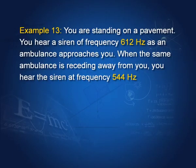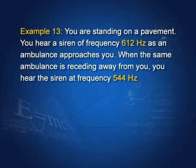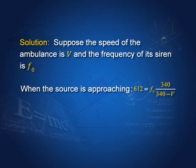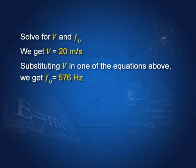Example: you hear an ambulance siren at 612 Hz as it approaches and at 544 Hz as it recedes. Setting up two equations — 612 = f₀ × 340/(340 − v) for approach and 544 = f₀ × 340/(340 + v) for recession — and solving simultaneously gives the original frequency f₀ = 576 Hz and the ambulance's speed.